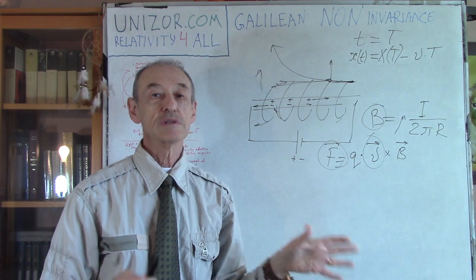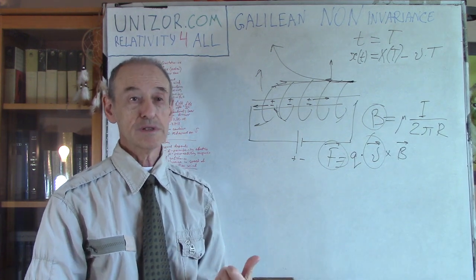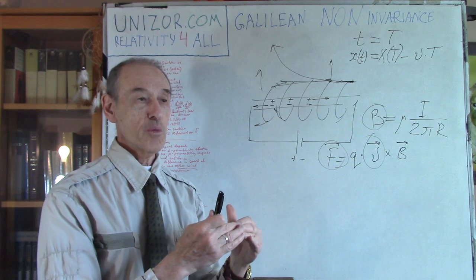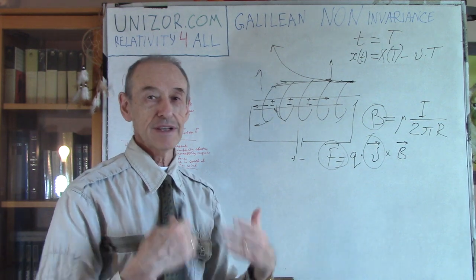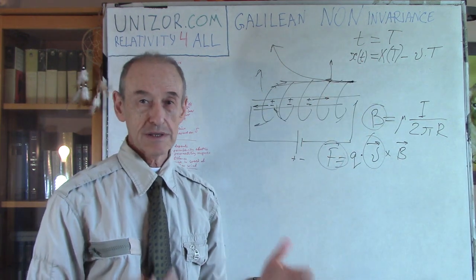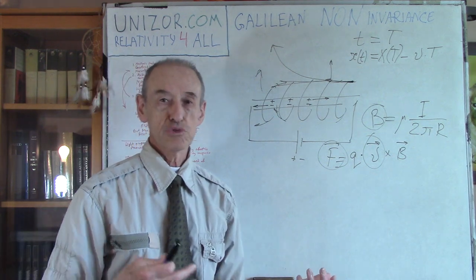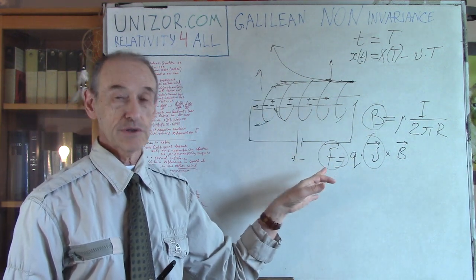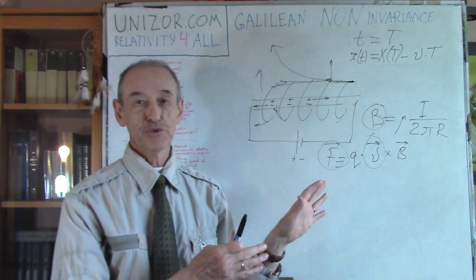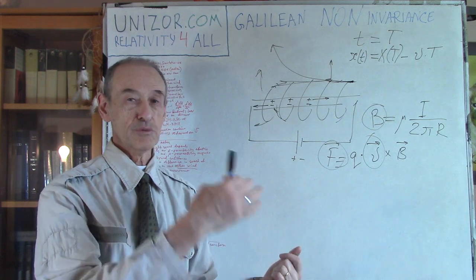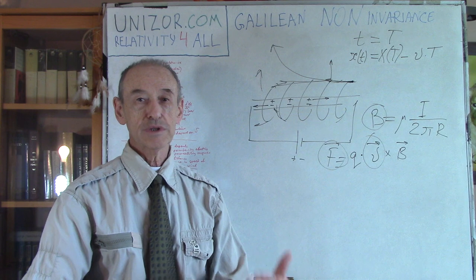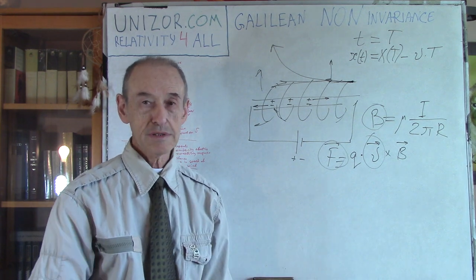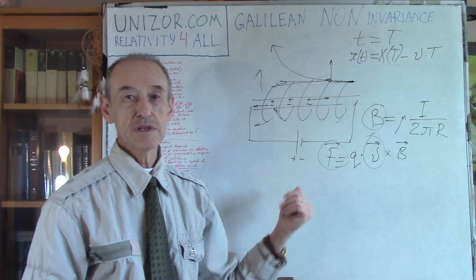Something is definitely there that we do not understand. The purpose of this lecture was to bring you to the point where something needed to be done — invented — changed in the Galilean transformation. Some other principles need to be brought into the picture of the world without contradictions like this. Starting from the next lecture, I will explain what theories were developed, primarily what Einstein did in 1905 to overcome these contradictions.